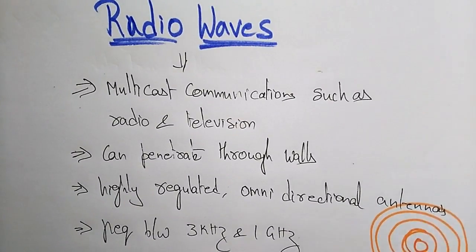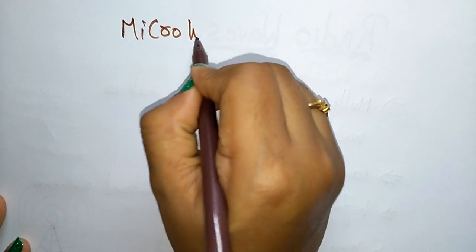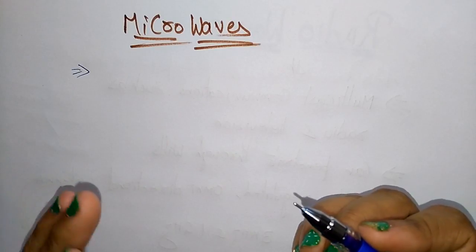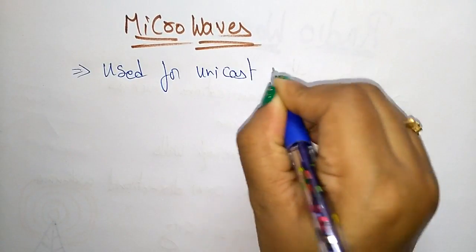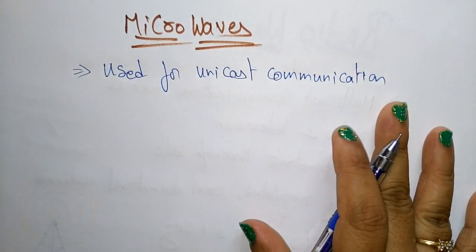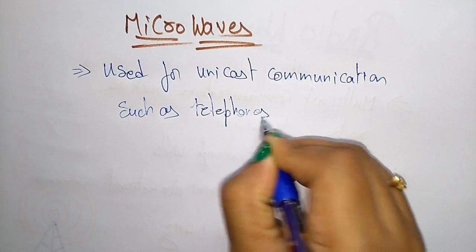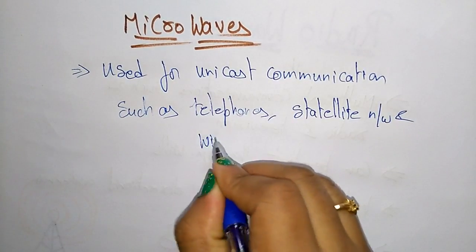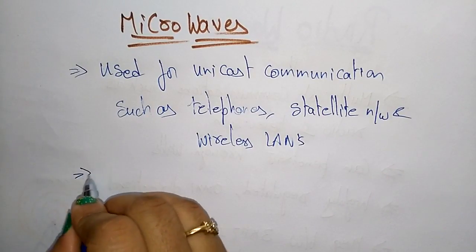Now coming to the next unguided transmission media: microwaves. Whereas radio waves are used for multicasting, microwaves are used for unicast communication. Microwaves are used whenever you need unicast communication, such as telephones, satellite networks, or wireless LANs.